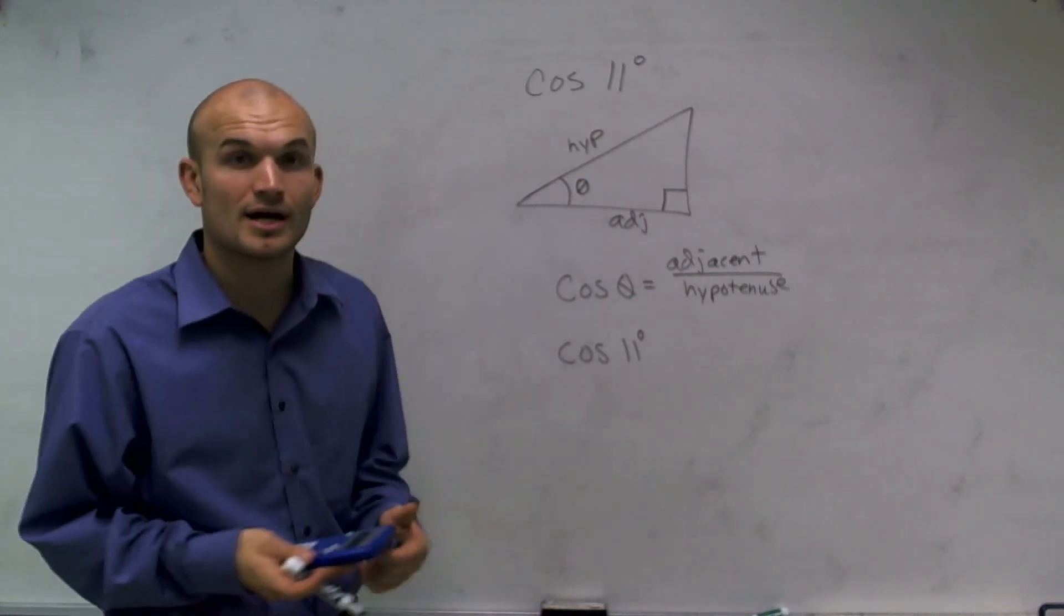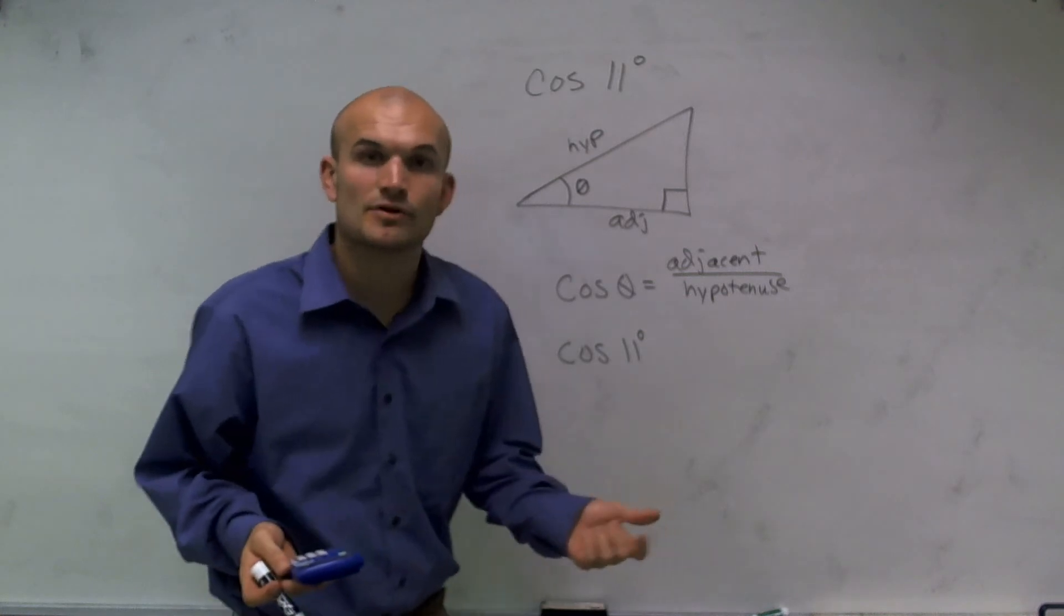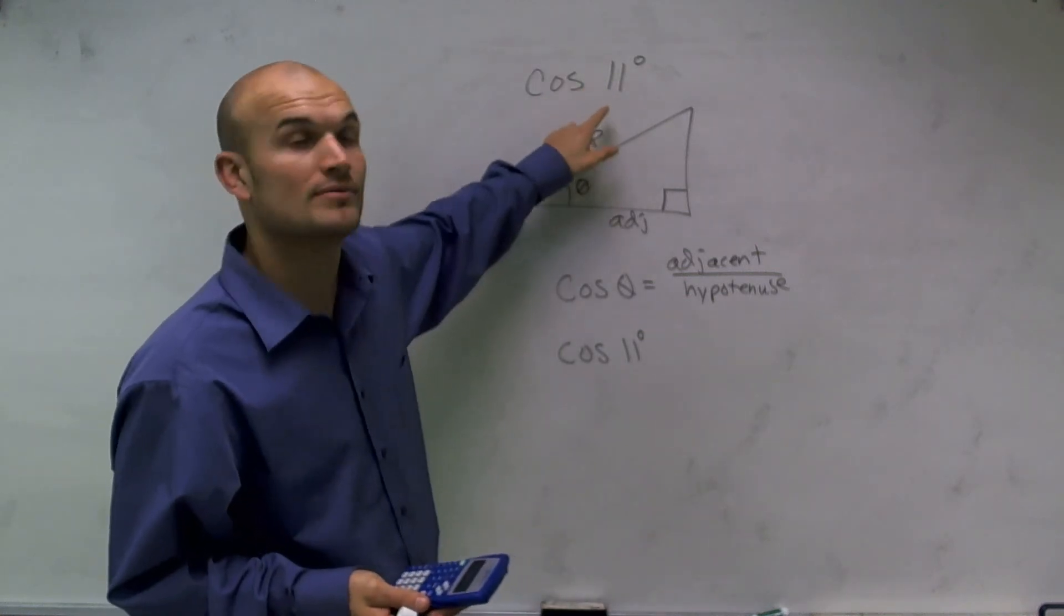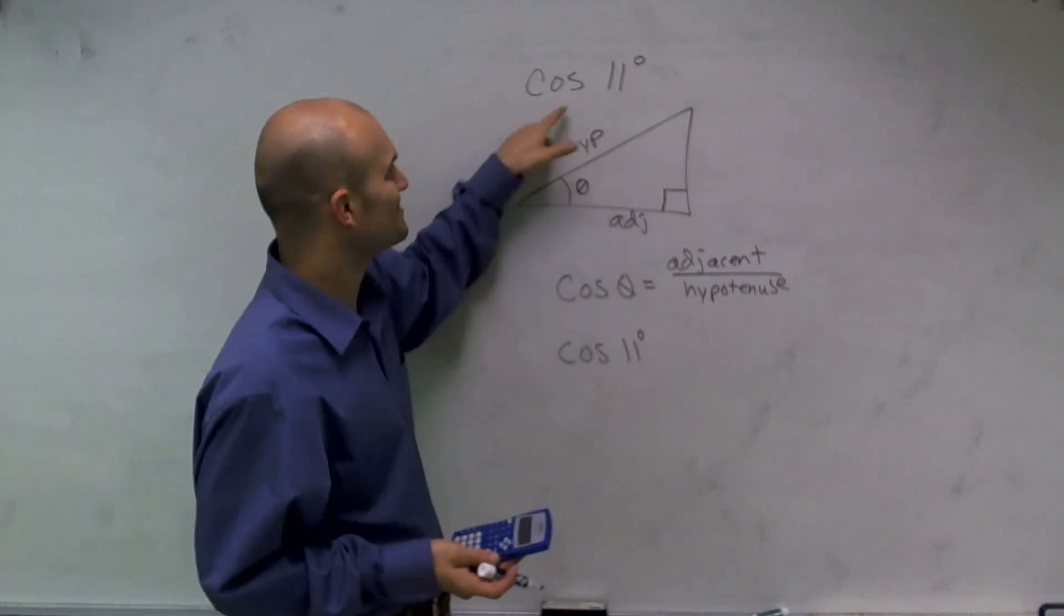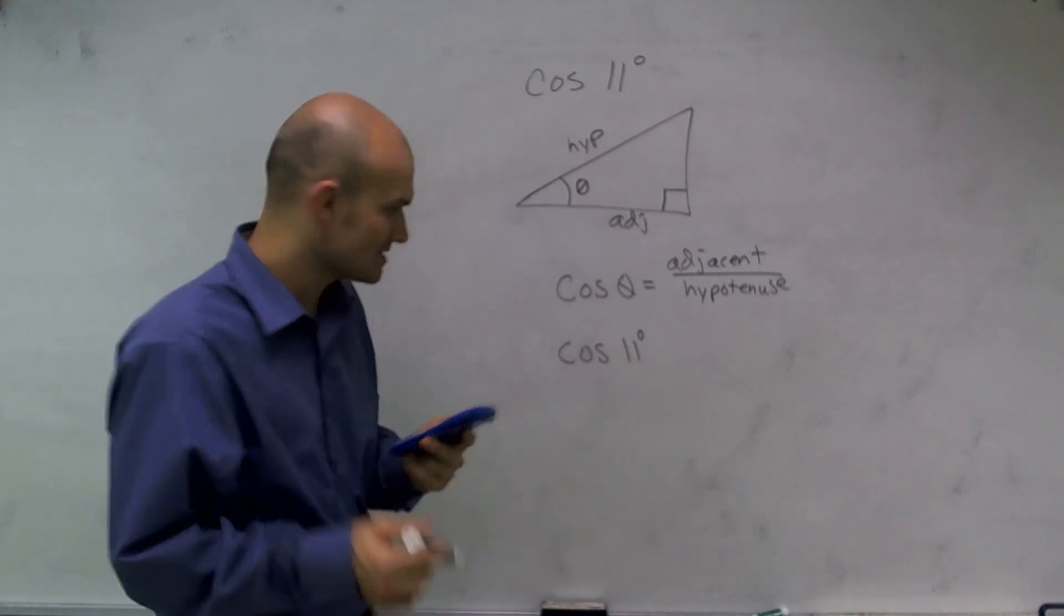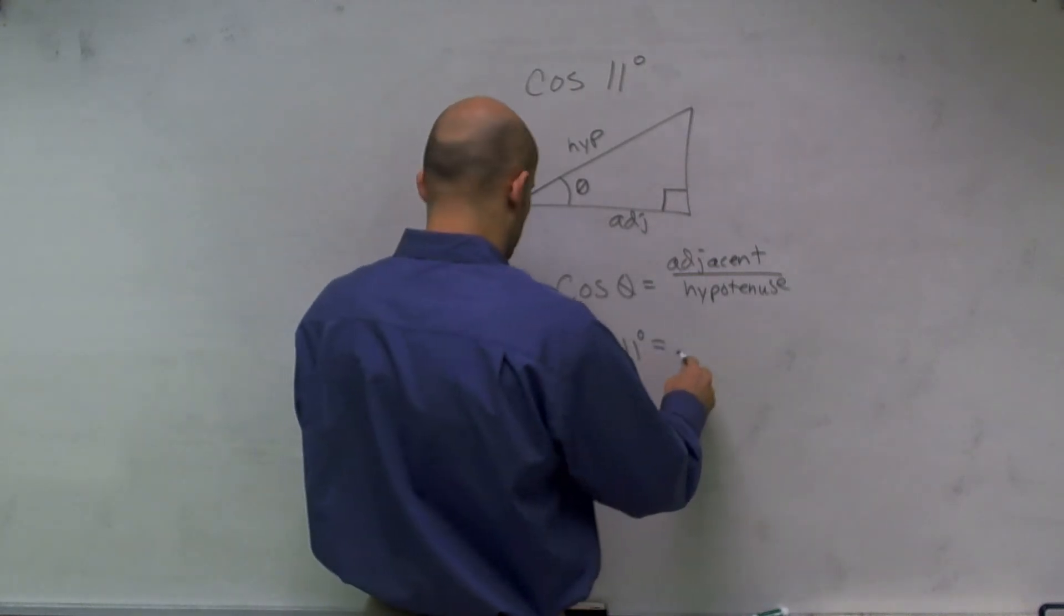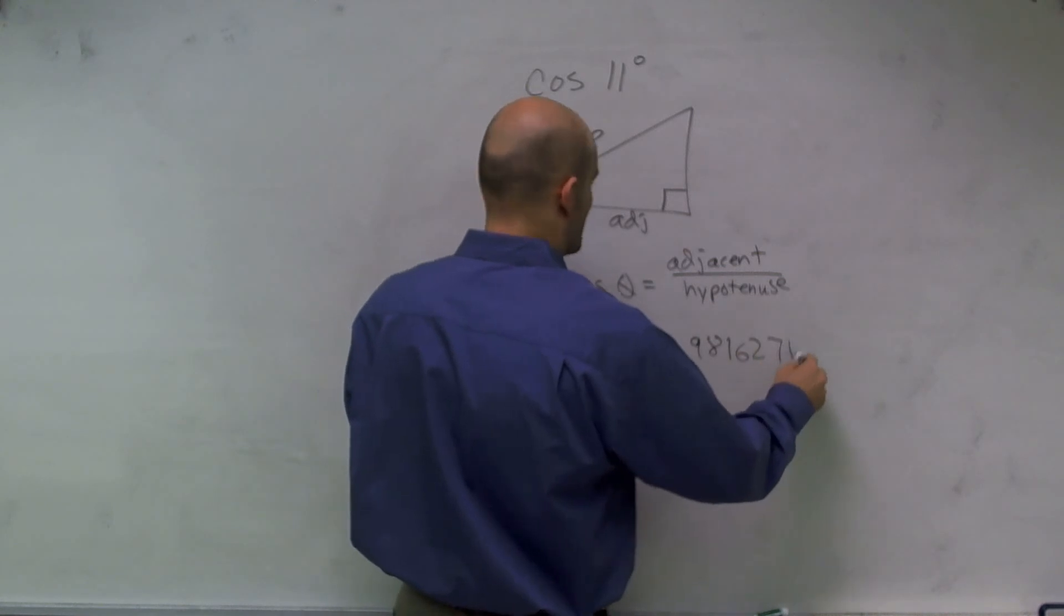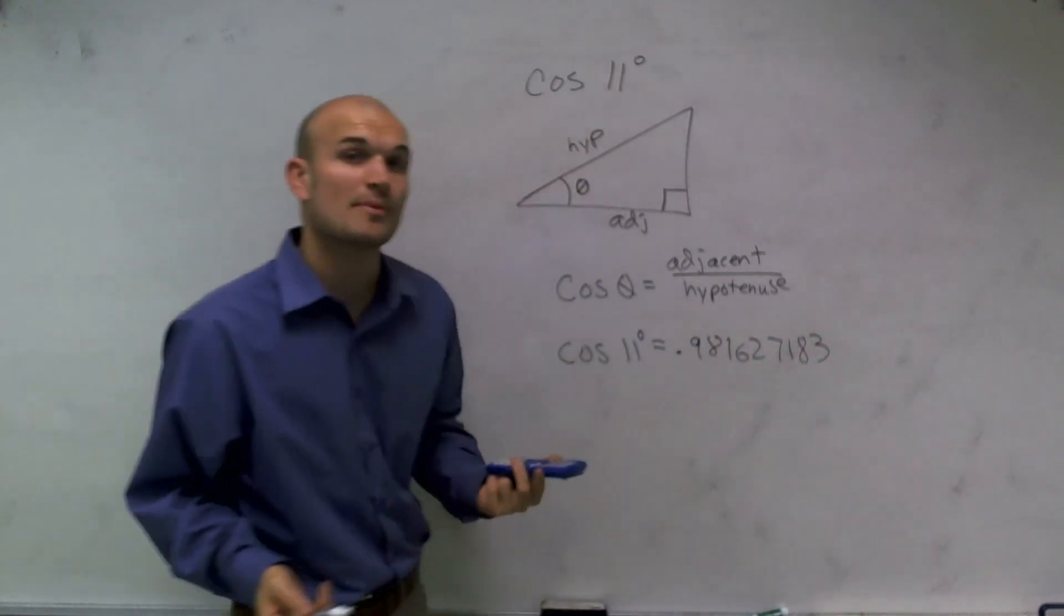Now, to figure that number out, we're going to have to plug in our calculator. So we can take any scientific or graphic calculator. And I'm simply going to make sure I'm in degree mode. And then I'm just going to type in cosine of 11 degrees. So cosine of 11 degrees gives me 0.981627183. And that's all that shows up on my calculator.